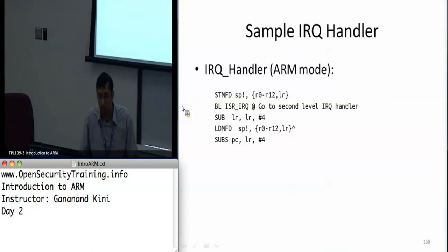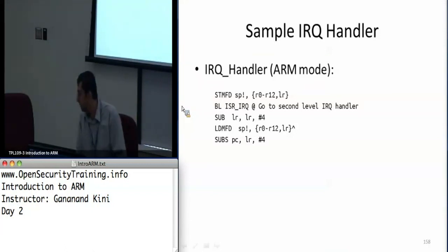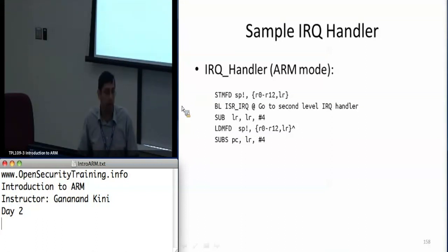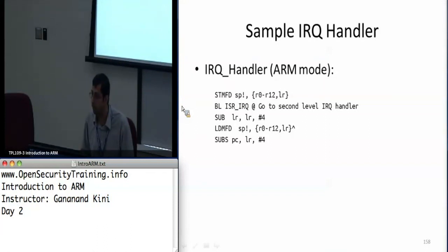Once you're done writing your IRQ code you load the registers back from the stack into R0 through R12, then execute SUB S PCLR — subtracting link register minus 4 — to return back to system mode. This simultaneously copies the SPSR back into the CPSR while updating the PC from the link register.